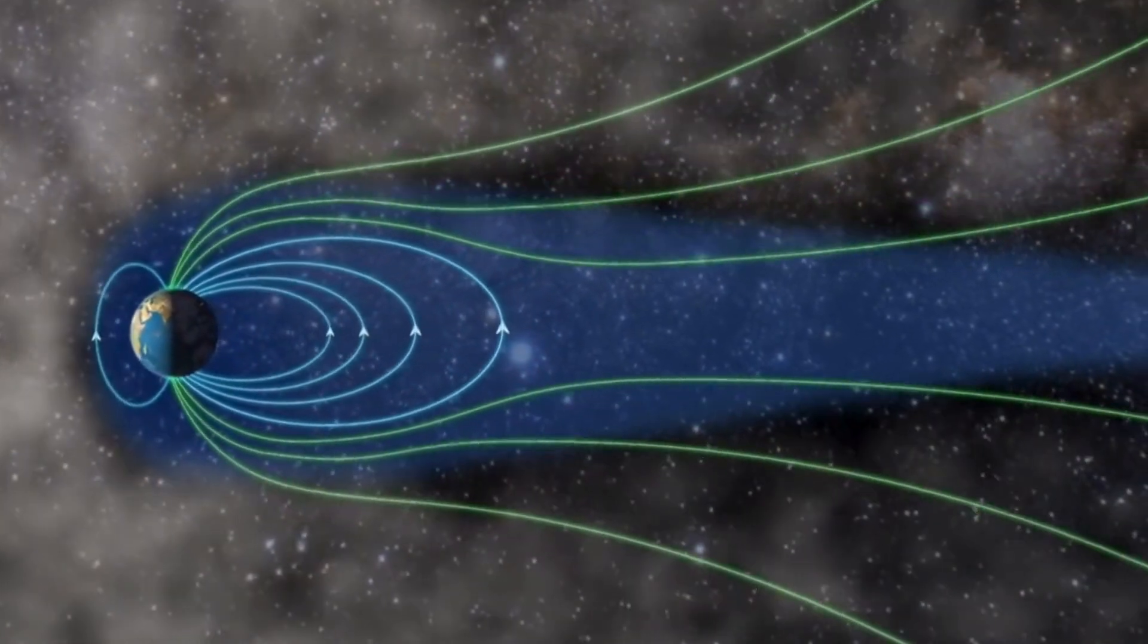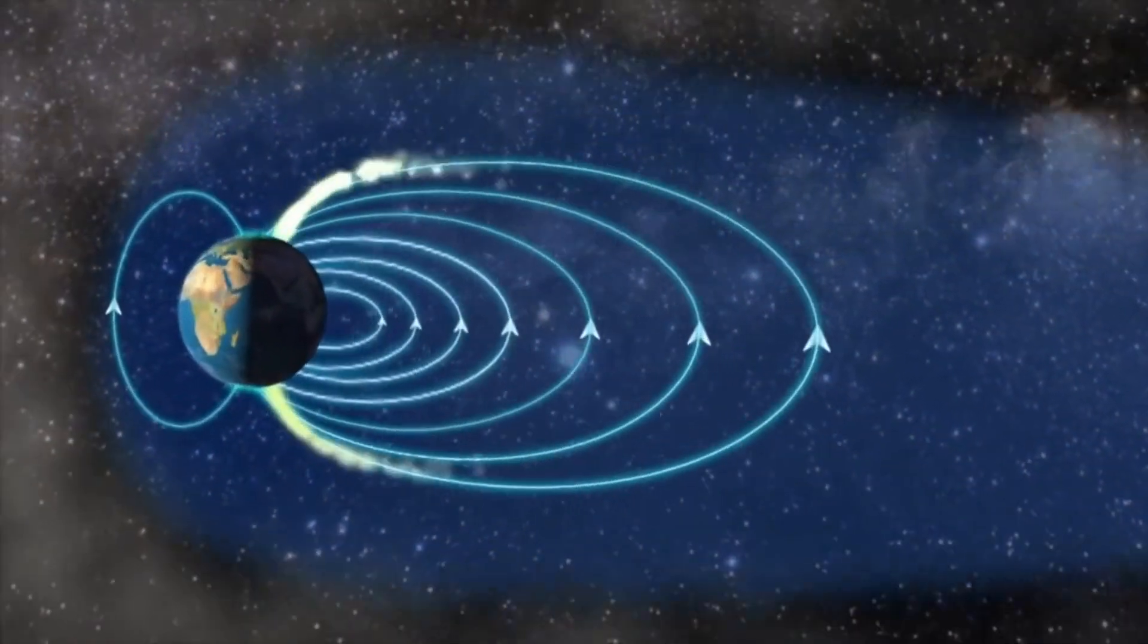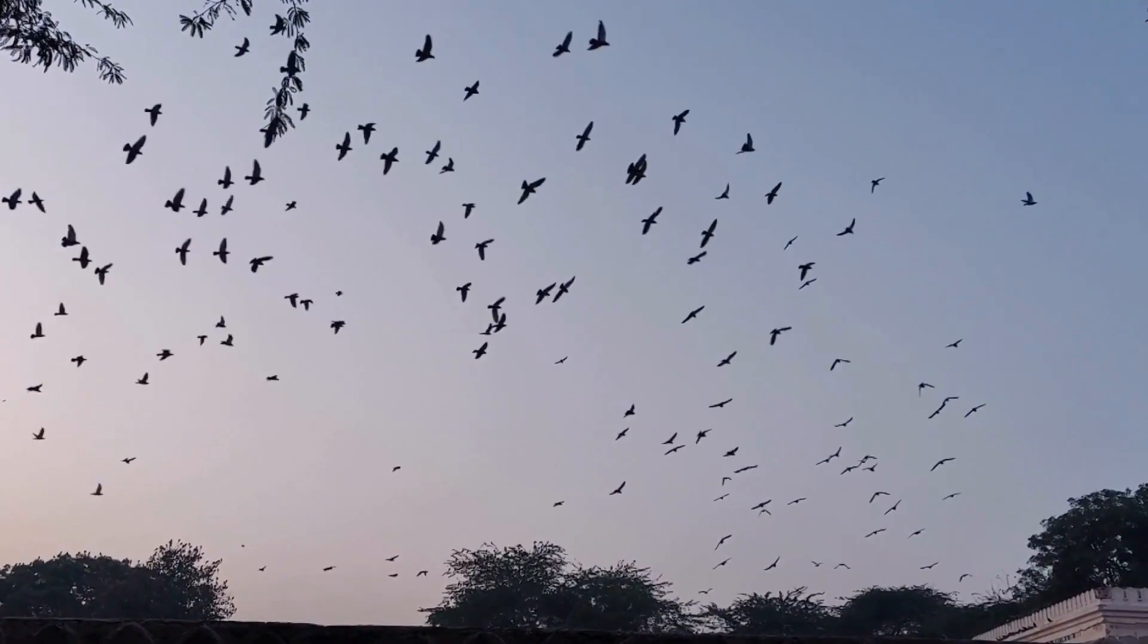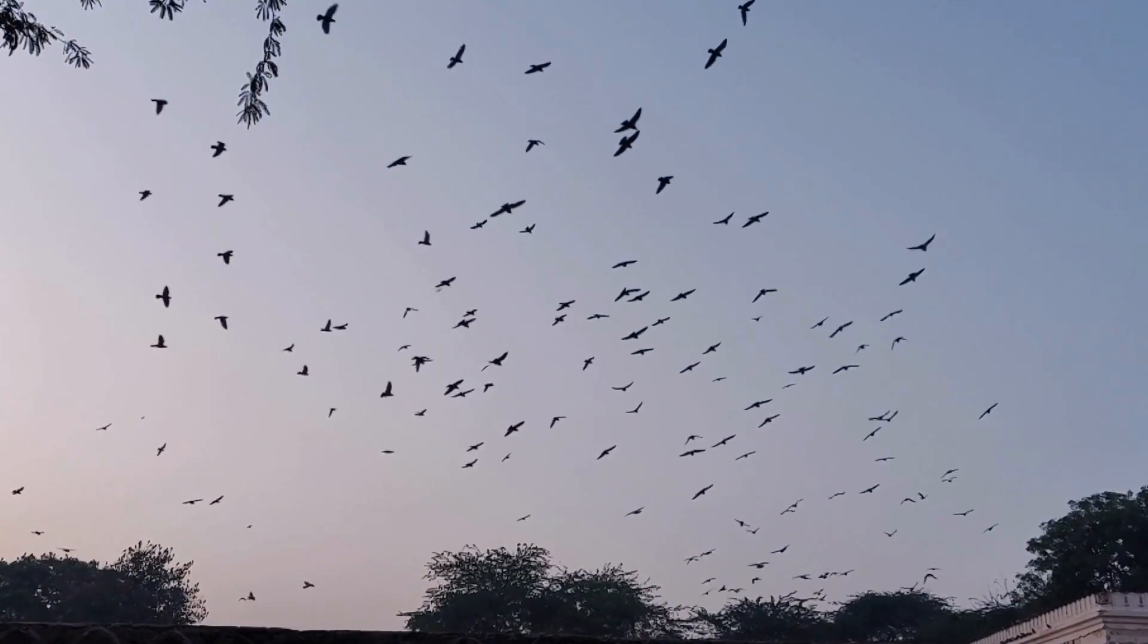Without the magnetic field, this radiation would reach the Earth's surface and make people ill. Some birds use the magnetic field to find their way, so without the Earth spinning, they would get lost.